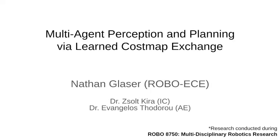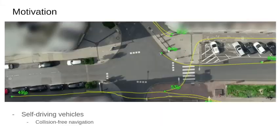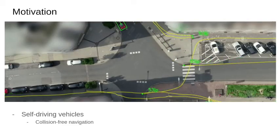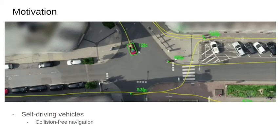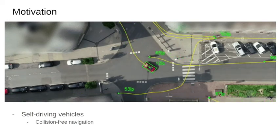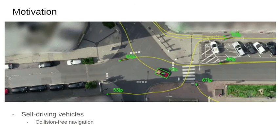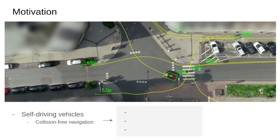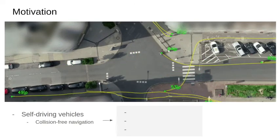Hello. My name is Nathan Glazer and I will be presenting Multi-Agent Perception and Planning via Learned Costmap Exchange. I have been working on this project in the ROBO 8750 class under the direction of Dr. Zsolt Kira and Dr. Evangelos Theodorou. Collision-free navigation is an important capability for self-driving vehicles. Significant time and energy have gone into ensuring that individual autonomous vehicles can move safely through an environment.